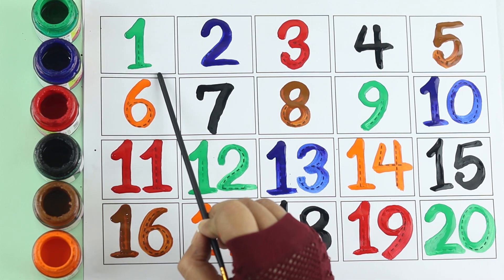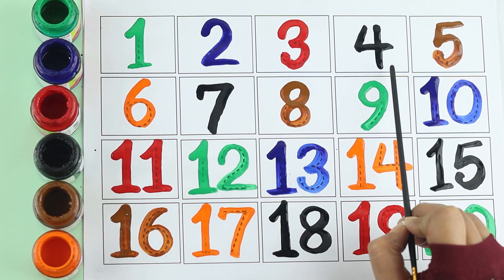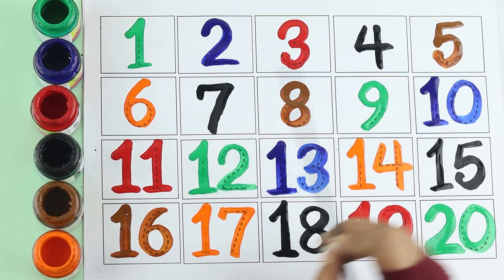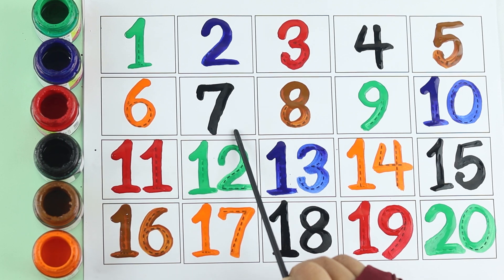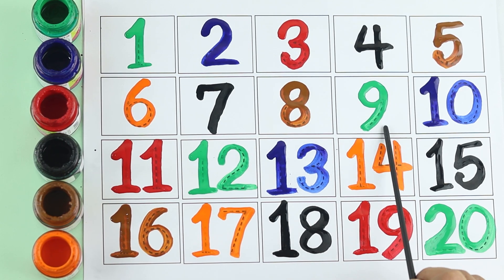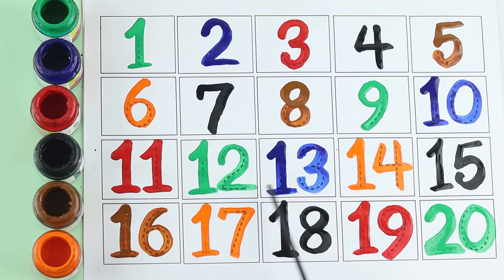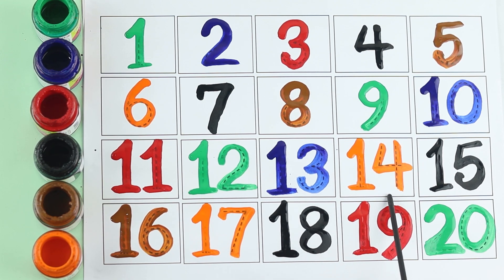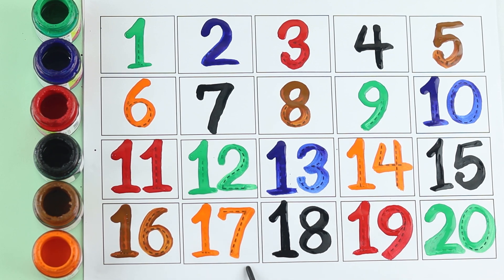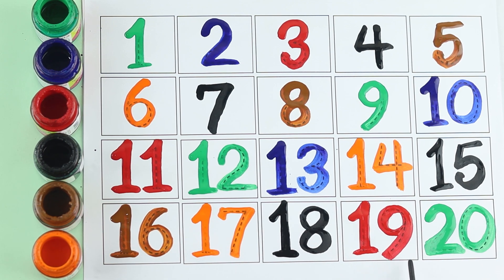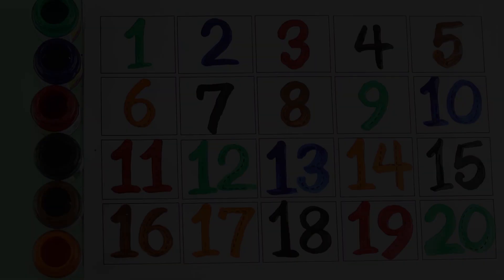One, two, three, four, five, six, seven, eight, nine, ten, eleven, twelve, thirteen, fourteen, fifteen, sixteen, seventeen, eighteen, nineteen, twenty. Twenty-one, twenty-two, twenty-three, twenty-four.